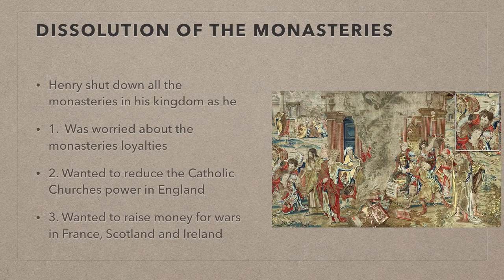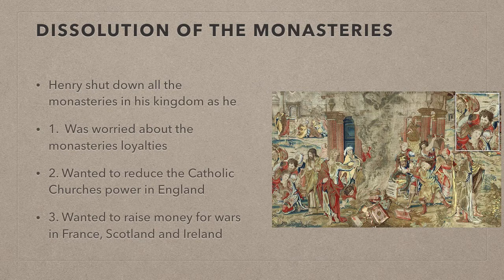However, one of the most controversial things Henry did was to get rid of all the monasteries in England, known as the dissolution of the monasteries. Henry wasn't opposed to them on theological grounds, but was worried about the monastic orders' loyalty, as they weren't directly under the bishops' control — who were now under Henry's control — but instead were under the rule of their heads, which were usually on the continent and regularly in Rome. Henry wanted to reduce the church's power in England and to raise money for wars in France, Scotland, and of most interest to us, Ireland.